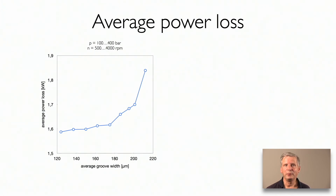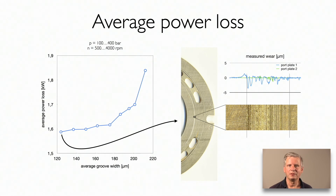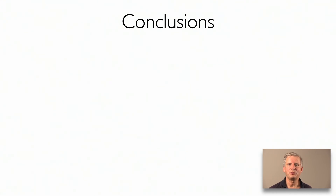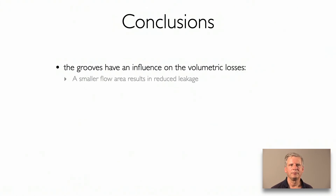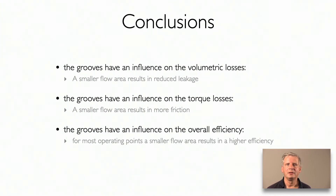We also monitored wear of the port plate. We didn't observe any wear until the final step, where we reduced the width to an average of 124 micron. At that point, we measured some wear at one of the port plates. This is the point where we decided to stop our experiments, because we entered into the mixed lubrication regime. So what have we learned? As expected, the dimensions of the groove influence the efficiency and power losses of the pump. The smaller flow area reduces leakage, but it also results in higher friction losses. In the end, these two effects cancel each other as long as the grooves don't get too large.